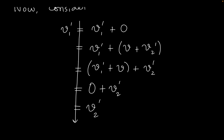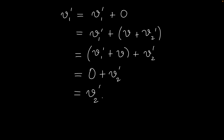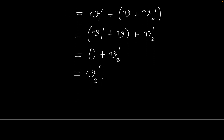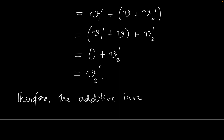We have proved through a chain of equalities that v'₁ equals v'₂. So if there were really two separate objects both qualifying as additive inverses, they have to be the same object. We can end the proof here. Therefore, the additive inverse is unique. And that is the end of the proof.